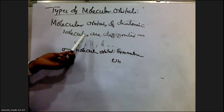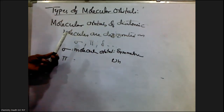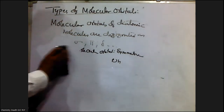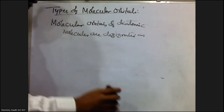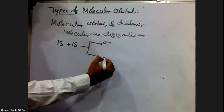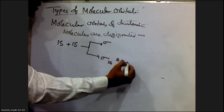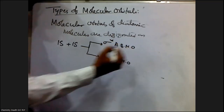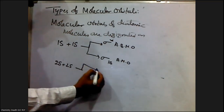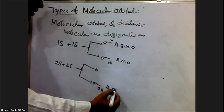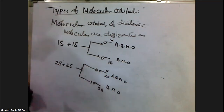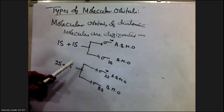For example, if you take the 1s atomic orbital, two 1s atomic orbitals will combine and form two molecular orbitals: one is sigma 1s, which is the bonding molecular orbital, and another is sigma star 1s, which is the anti-bonding molecular orbital. Similarly, 2s atomic orbitals will combine and form two molecular orbitals: sigma 2s, the bonding molecular orbital, and sigma star 2s, the anti-bonding molecular orbital.